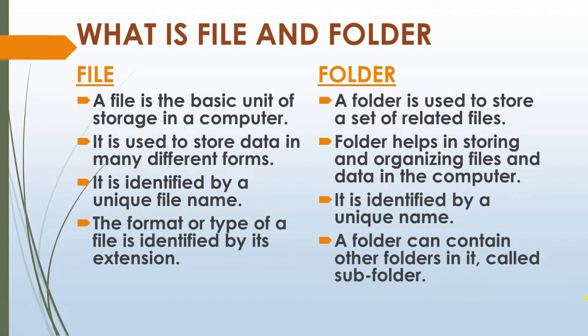What is a file and folder? A file is the basic unit of storage in a computer. It is used to store data in many different forms. It is identified by a unique file name. The format or type of a file is identified by its extension.